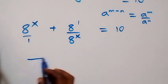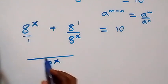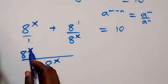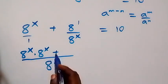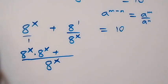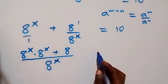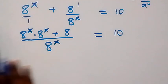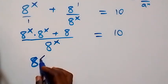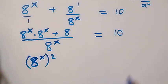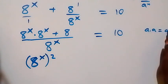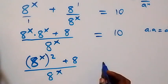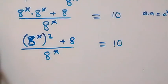Next, we bring this together as one fraction. The LCM here is 8 raised to power x. So we have: 8 raised to power x times 8 raised to power x, plus 8 — since 8 raised to power x over 8 raised to power x is 1, times 8 raised to power 1, that's 8 — all over 8 raised to power x equals 10. The numerator becomes 8 raised to power x squared, plus 8.